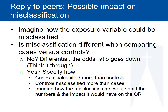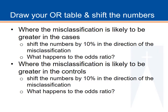Would the misclassification have weakened the association or brought the odds ratio down? If so, the true odds ratio is likely to be stronger. Or would the misclassification have inflated the odds ratio, causing it to reflect a stronger association than is likely to be true? In order to sort it out, imagine the scenario and its impact on the odds ratio by shifting the numbers only in the group where the misclassification is expected to be greater. That will help you visualize whether the odds ratio would go up or down.